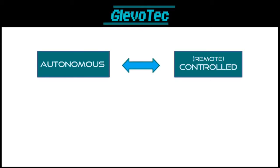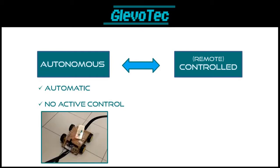First of all, we can divide robots into two different categories: autonomous and controlled. Autonomous robots are robots that can operate without actively controlling it. This means it functions on itself, or at least part of it runs automatically. Examples are typical line-follower robots, which are designed to follow a line on the floor purely automatically, without user interference.